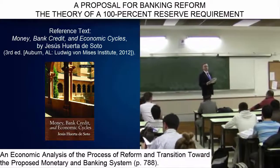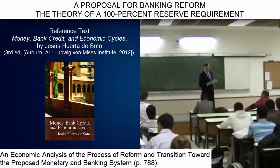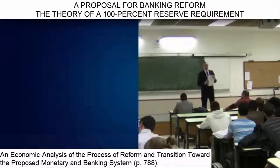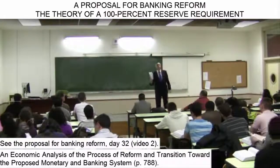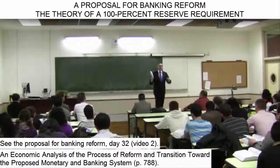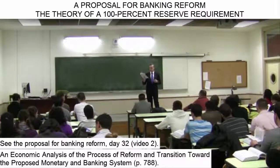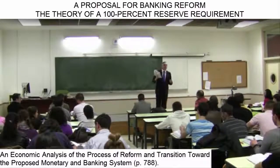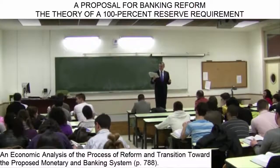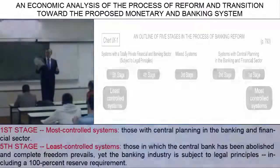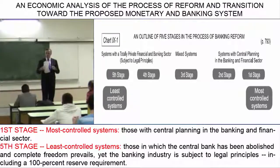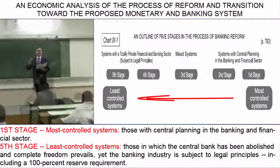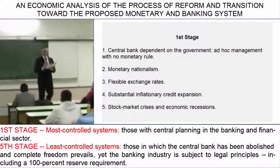Now we will wind up the book with Section 5 and an analysis of the reform process. Not only do I propose three fundamental measures to be adopted, but I also explain, from a political standpoint, how, at minimal cost, they could be adopted in five stages, which I have outlined in Chart 9.1.